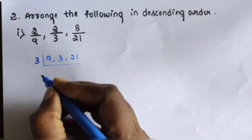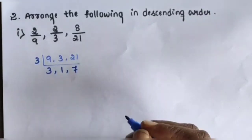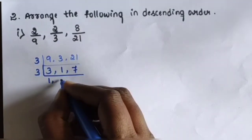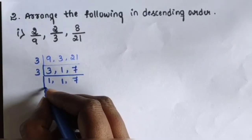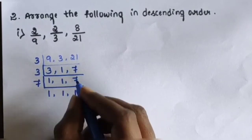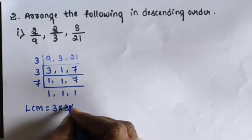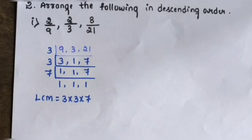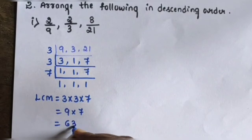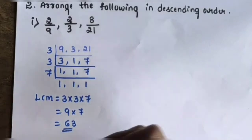To find LCM of 9, 3, and 21: take 3 — 3 ones are 3, 3 ones are 3, 3 sevens are 21. Again take 3 — 3 ones are 3, 1, 7. Take 7 — 1, 1, 7 ones are 7. LCM equals 3 into 3 into 7. 3 threes are 9, into 7: 9 sevens are 63. So LCM is 63.